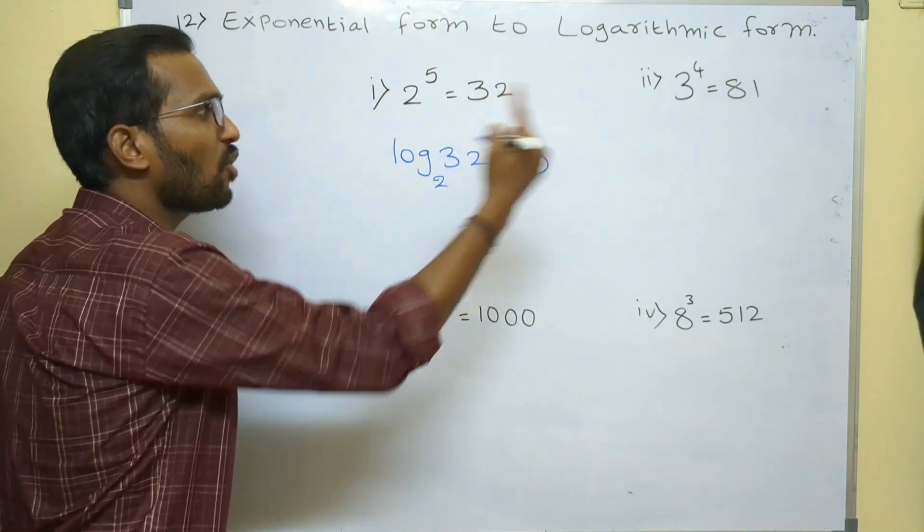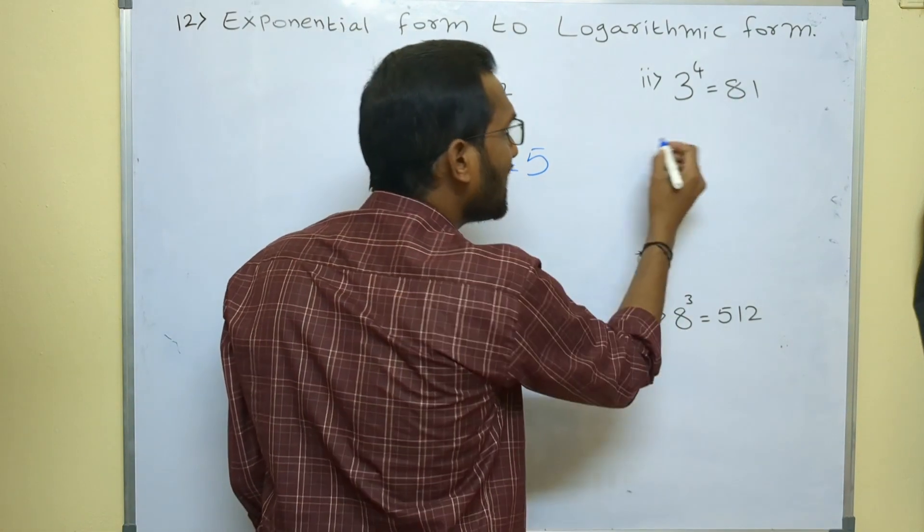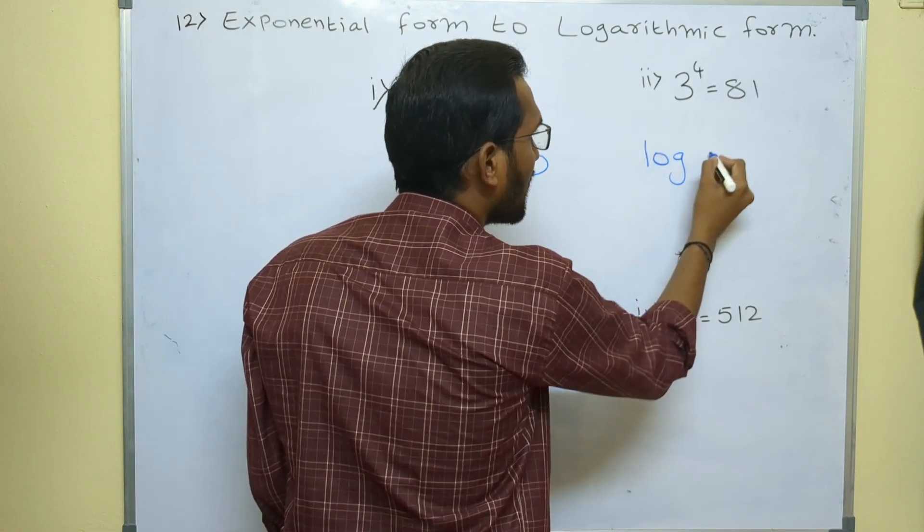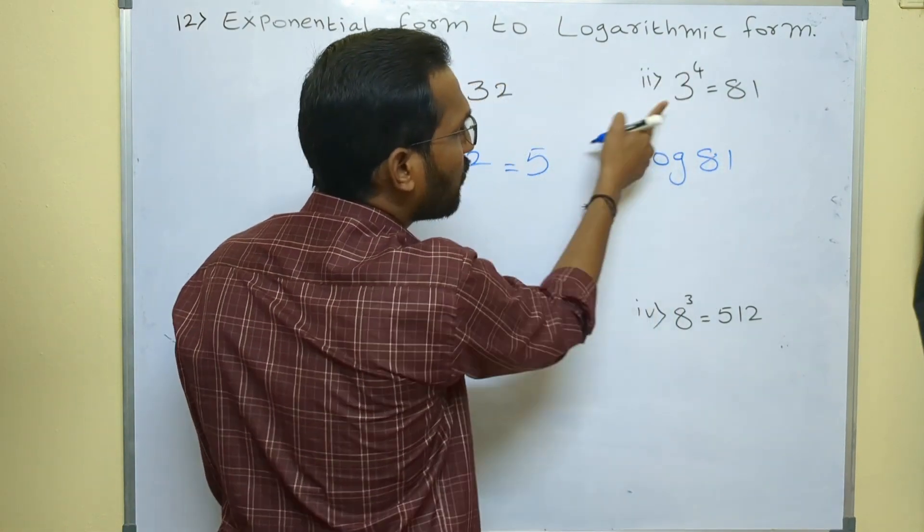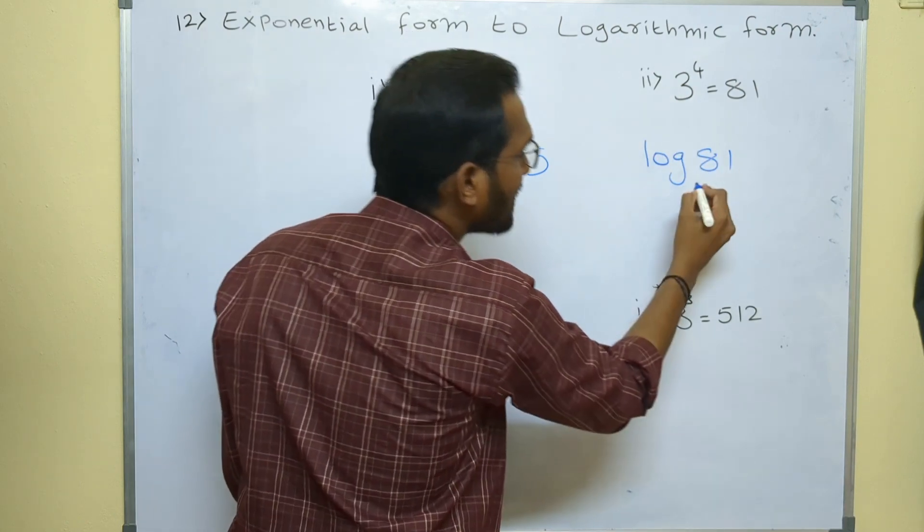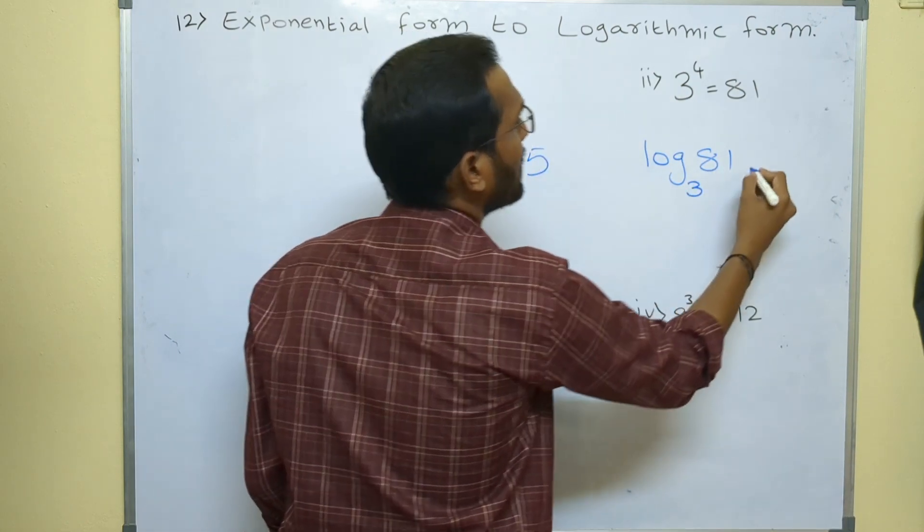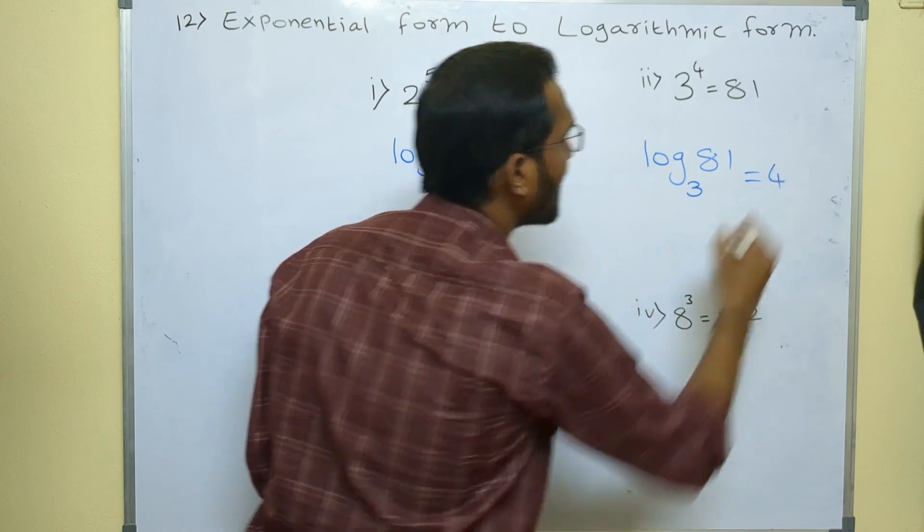Let us check one more. 3 power 4 equals 81. For the 81 keep log, log 81. In 3 power 4 base is 3, right. Write that base as it is here also as the base equals to power as the answer.